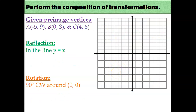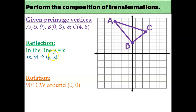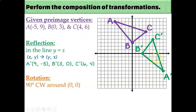Let's try another one. Again, we'll put our pre-image coordinates on the graph to get started. The first transformation we'll perform is a reflection in the line y equals x. The rule for that is just changing the order of your coordinates: x, y becomes y, x. So let's change the order of each of these numbers and then plot that on the graph. There is the first transformation I'm doing to triangle A'B'C.